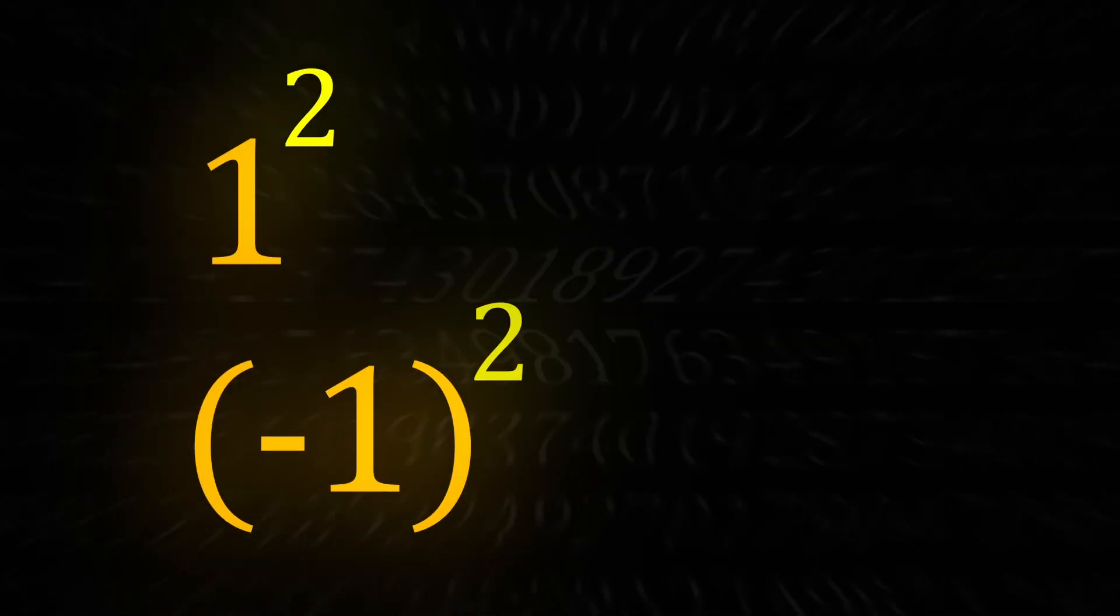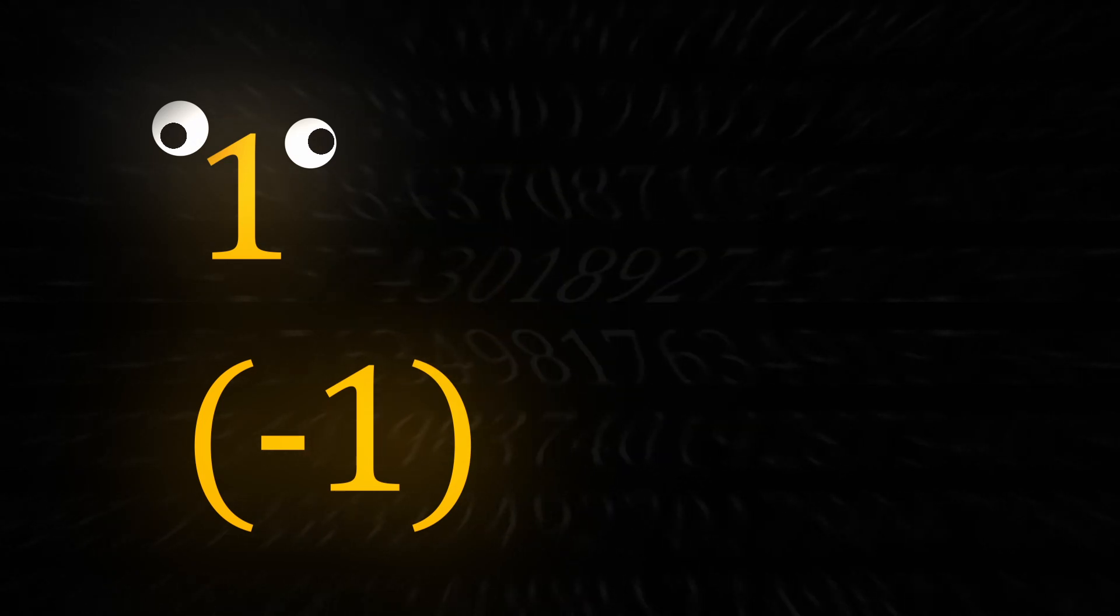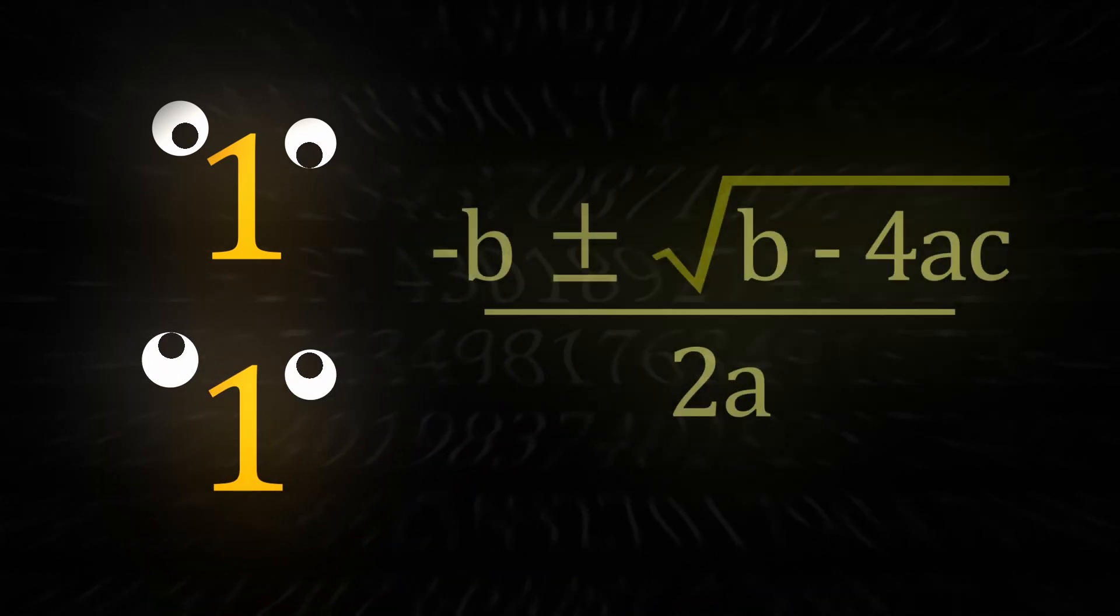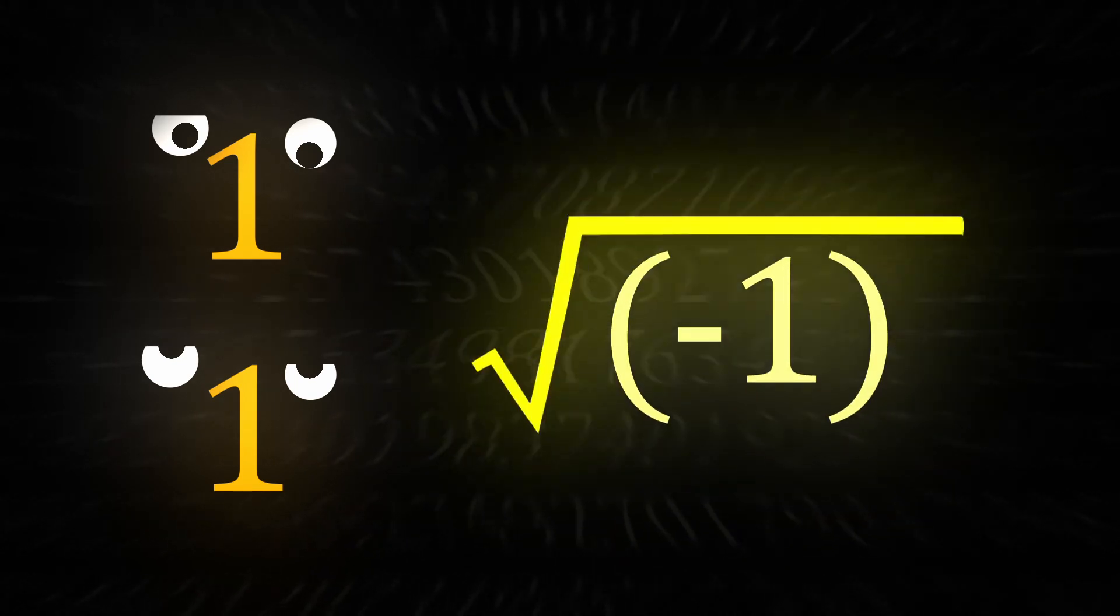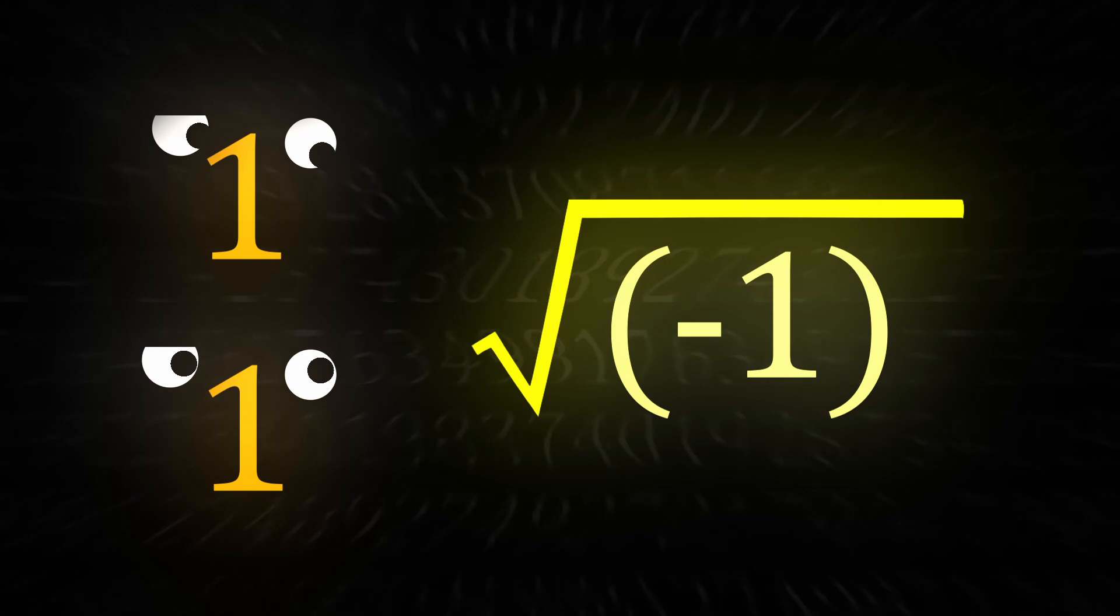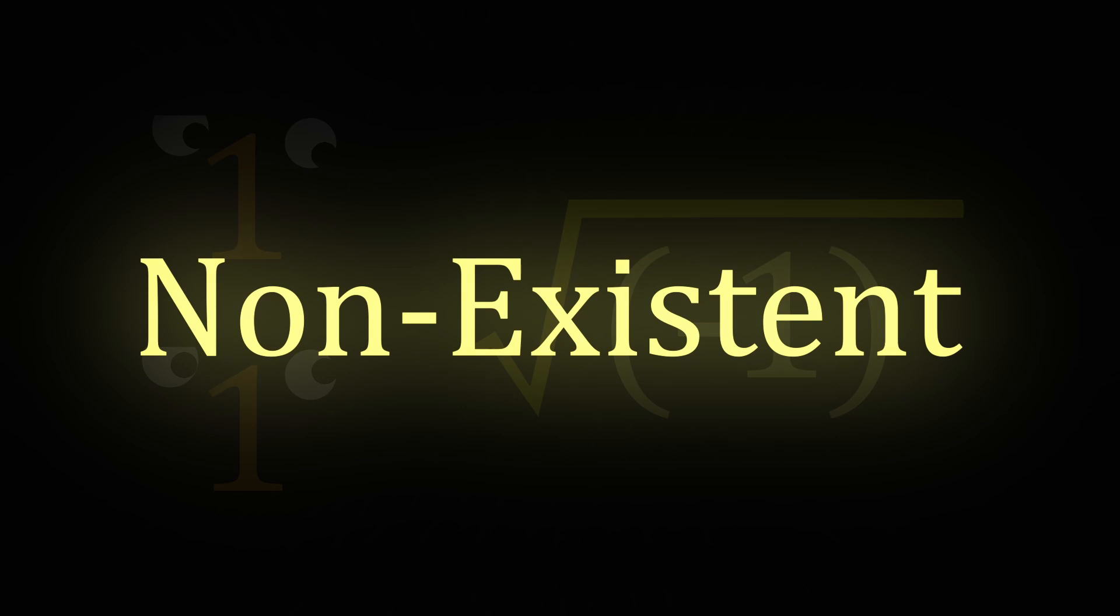Anyways, if you square a positive number, it gives a positive result, and if you square a negative number, it gives the same positive result. It's why we have the plus or minus symbol for quadratics, and it's also why we don't have such things as the square root of negative numbers. It doesn't exist. It just simply isn't possible.